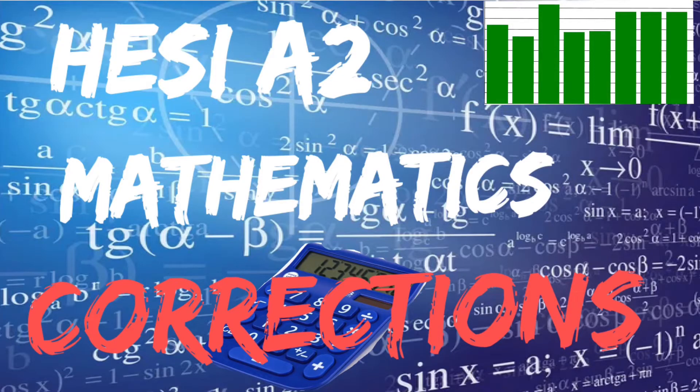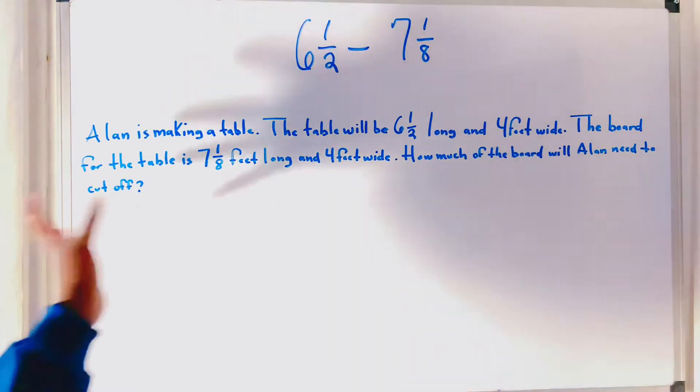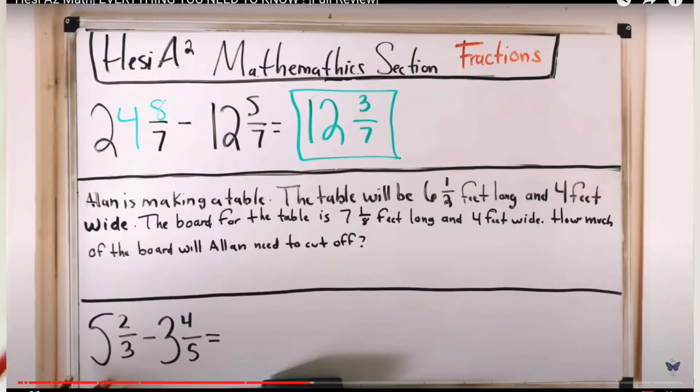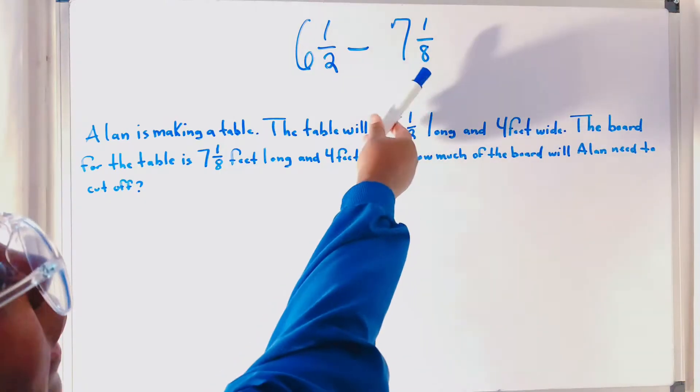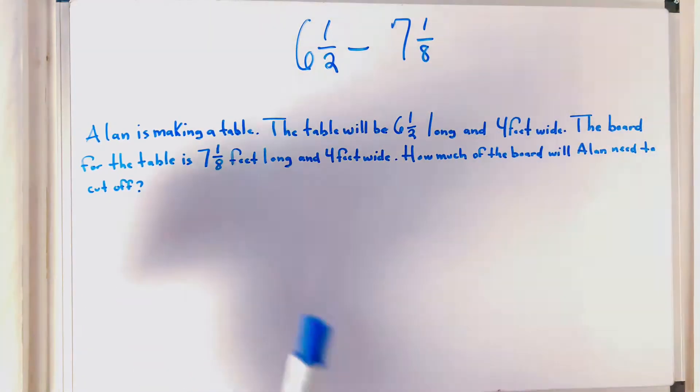Hello everyone, this is a HESI A-square mathematics review correction video. In the video, I had a problem that looks like this. And what I did wrong was, instead of writing a 7 here, I put a 1 instead. And that's why the problem ended up being wrong to you all.